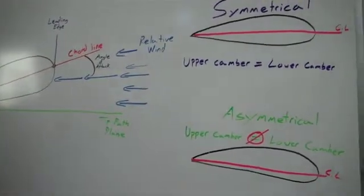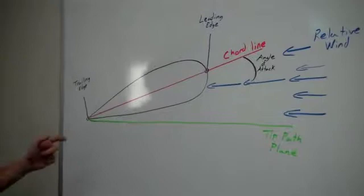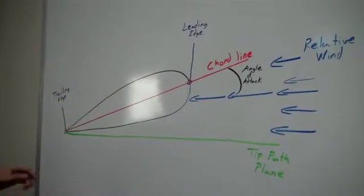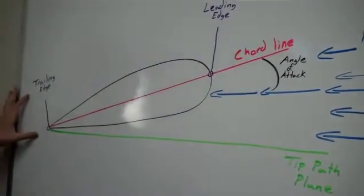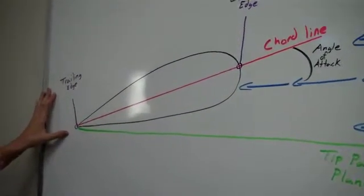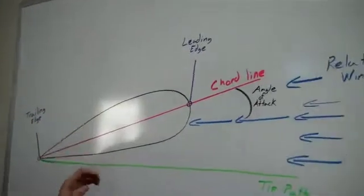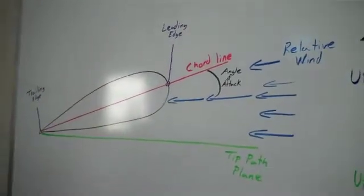Going a little bit more in depth, we have a symmetrical airfoil drawn out over here. We have the trailing edge and the leading edge. The trailing edge is the aftmost point of the airfoil. The leading edge is the foremost point on that airfoil.